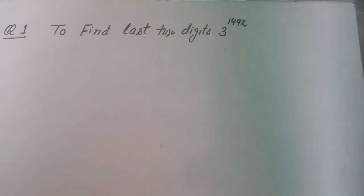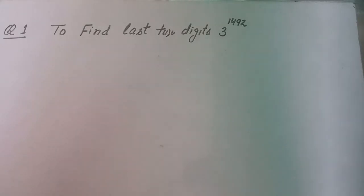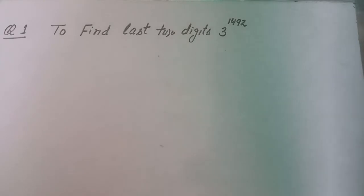For question one, we use the property that if a number is divided by 10, the remainder is the digit at the unit place. Similarly, if you divide a number by 100, the remainder gives you the last two digits. And if you divide a number by 1000, the remainder gives you the last three digits of that number.